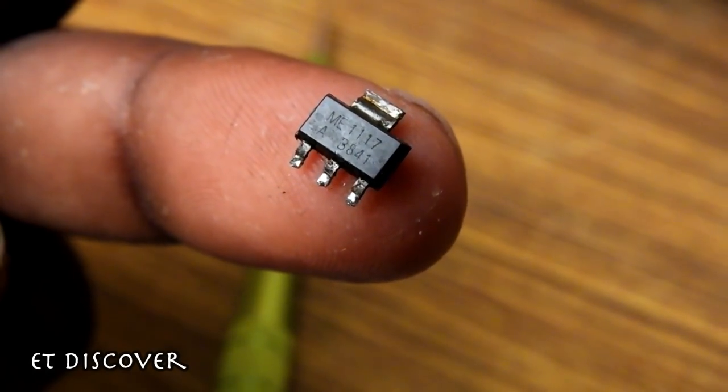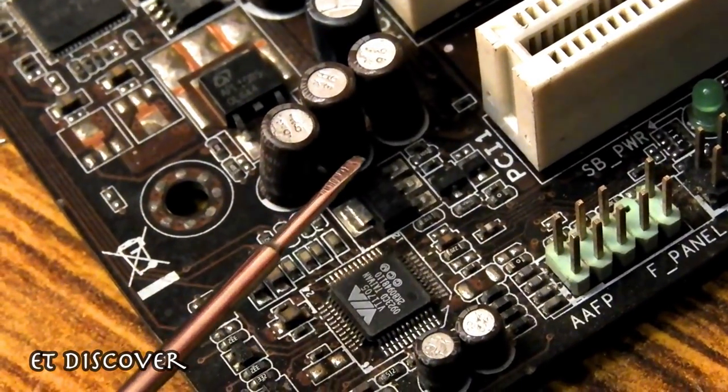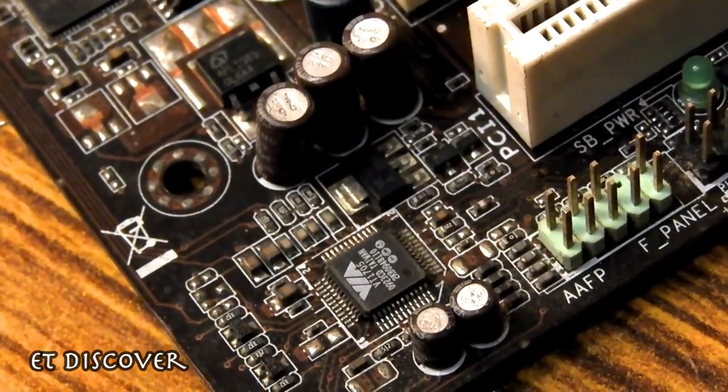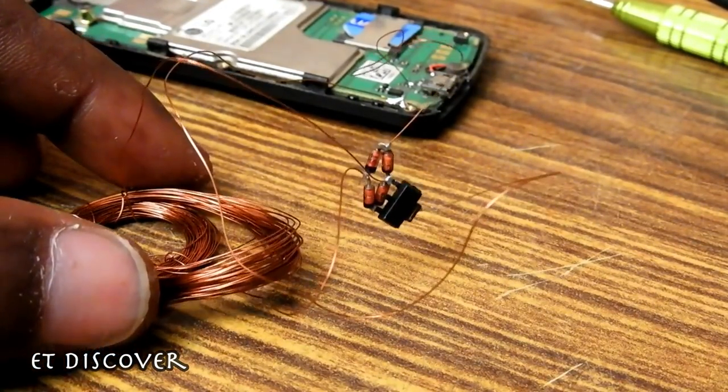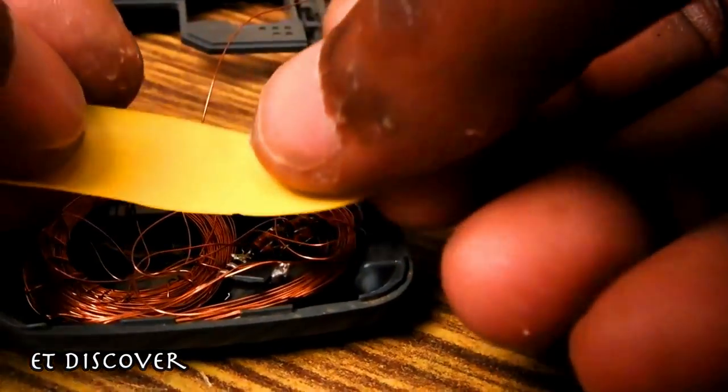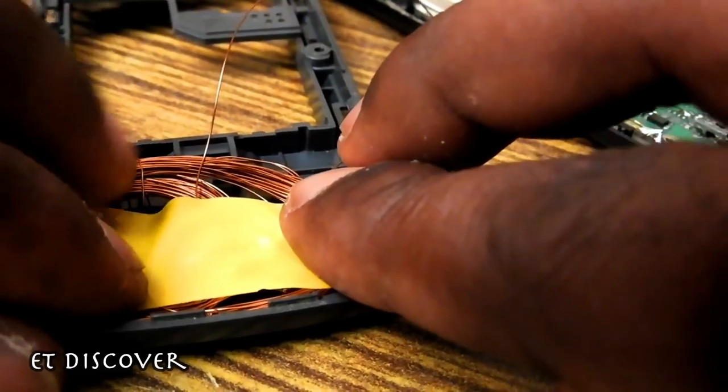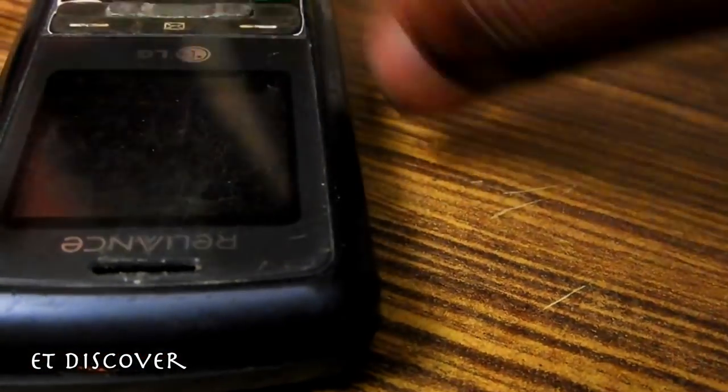So I used here ME117 SMD regulator IC. You can find this IC in old PC motherboard's audio section. There is no need to add a condenser. Mobile power supply is already there. And locked the back cover of mobile.